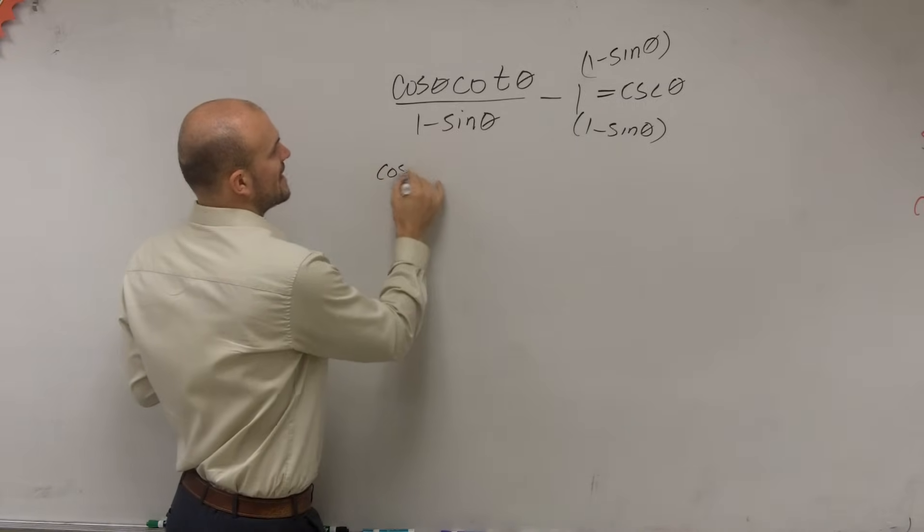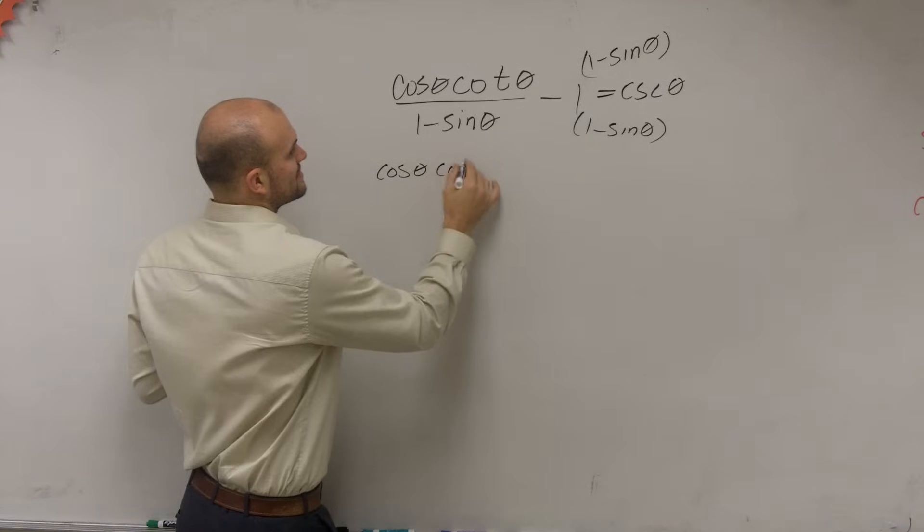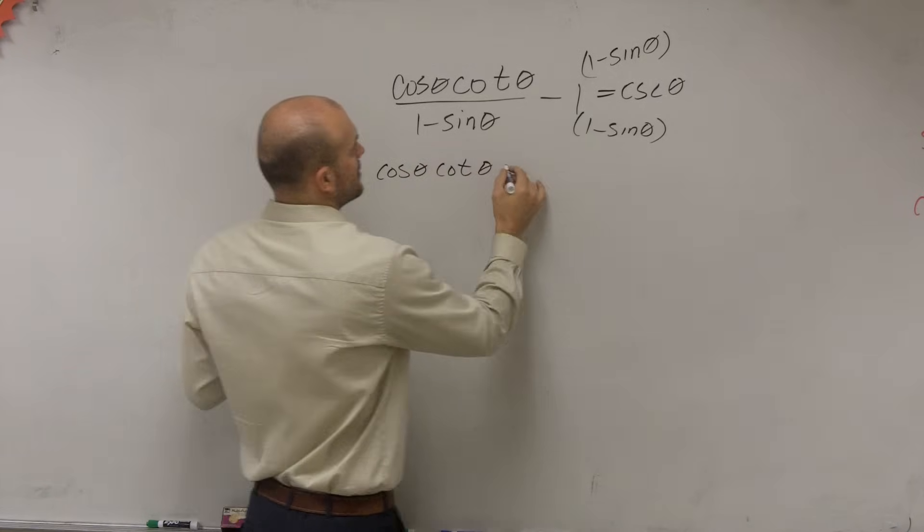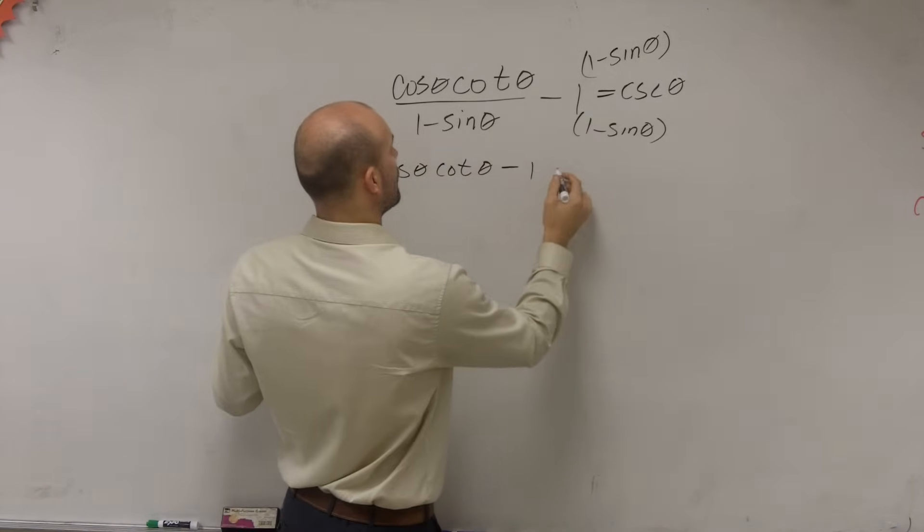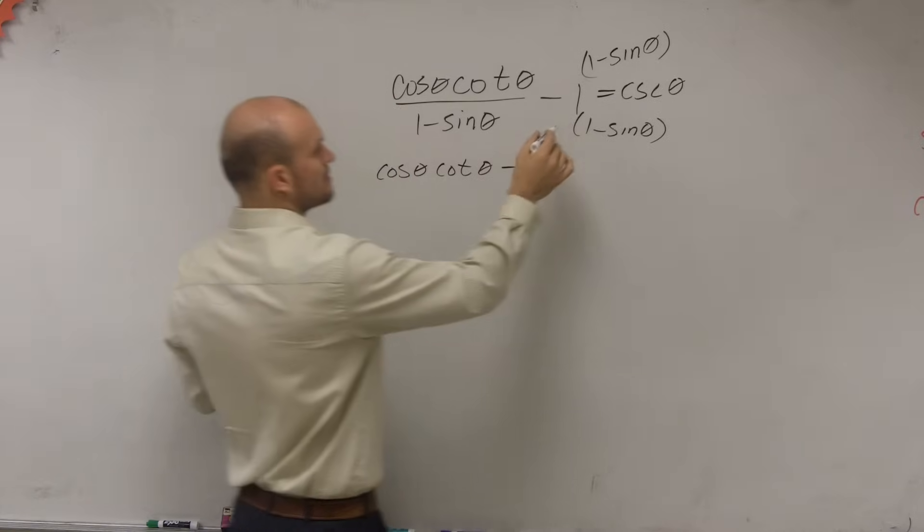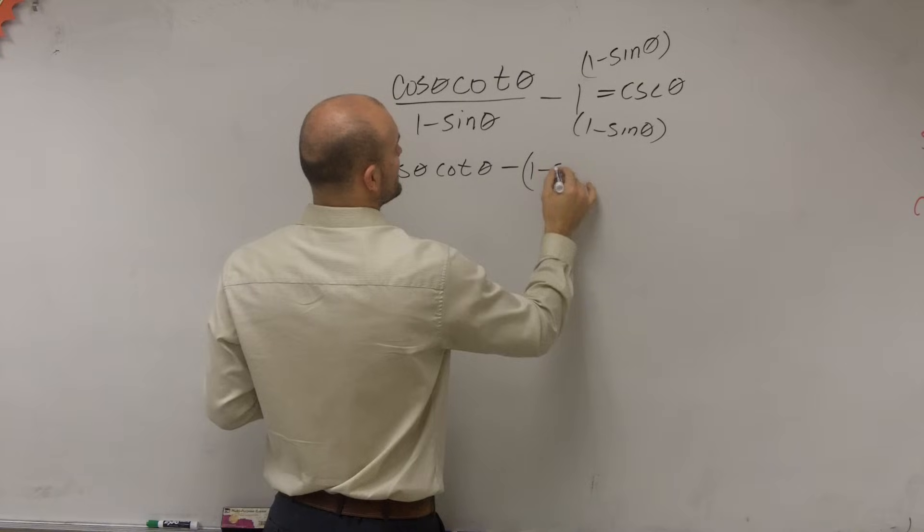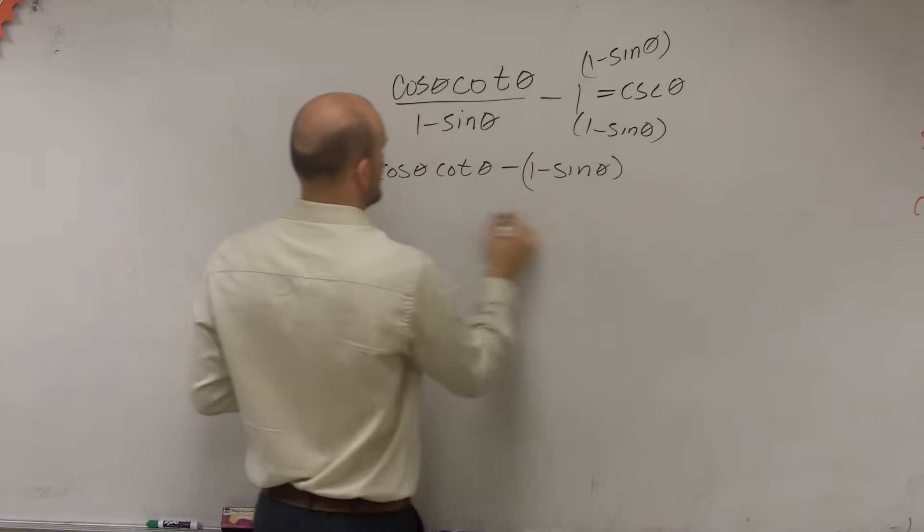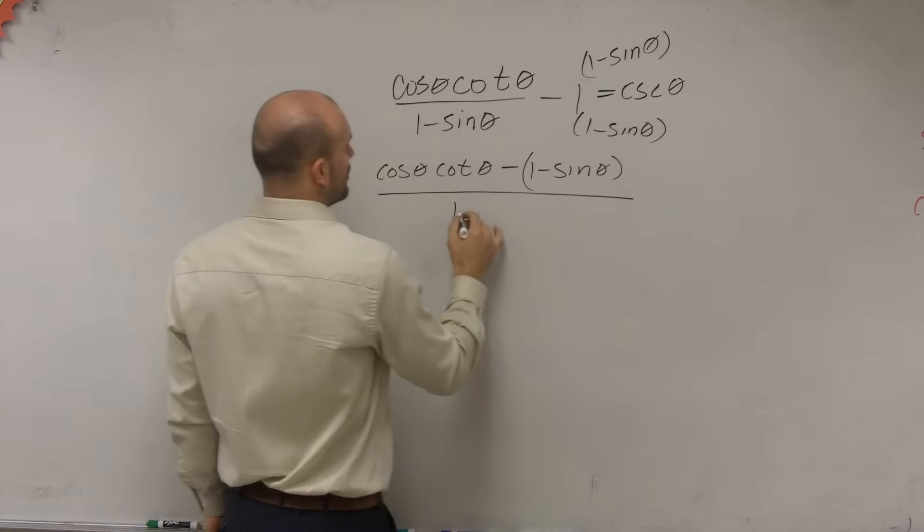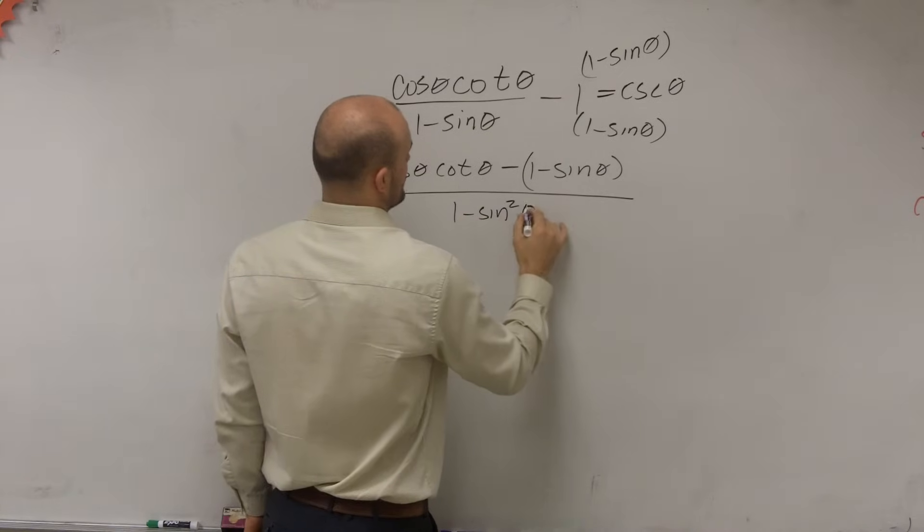So therefore, what we have is cosine of theta times cotangent of theta minus, minus 1 minus sine of theta, all divided by 1 minus sine theta squared.